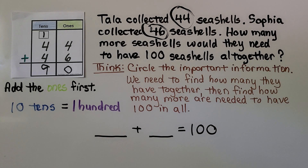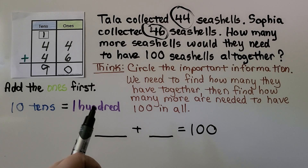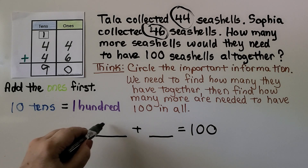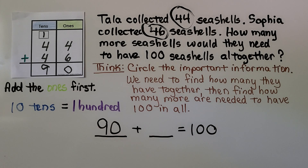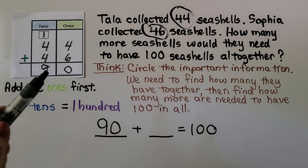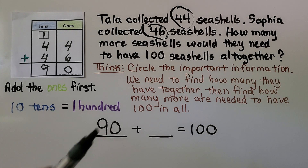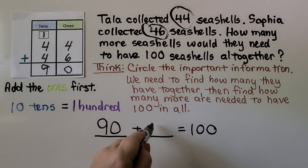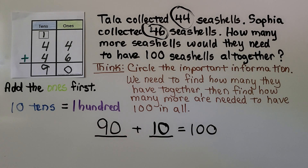They want 100 seashells. Ten tens is equal to 100, and 90 is nine tens. They have 90 — how many more do they need to have 100 seashells altogether? We could count on, or think: this is nine tens and we need ten tens, so we need one more ten. 90 plus 10 is equal to 100.